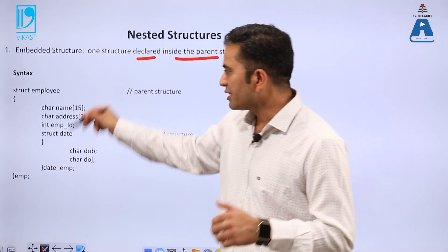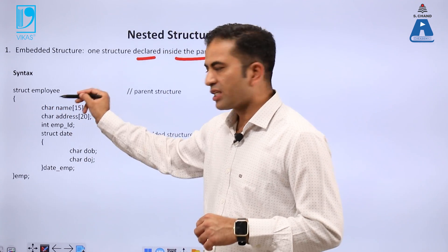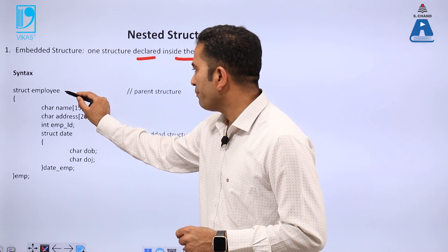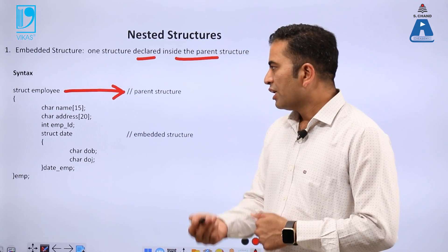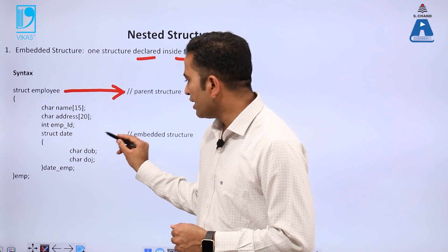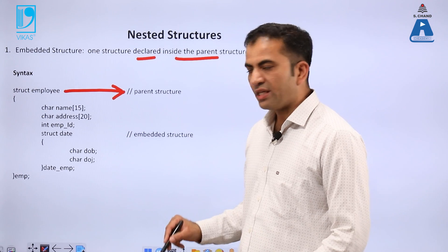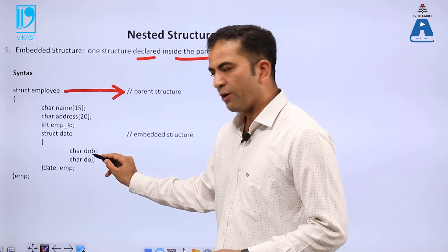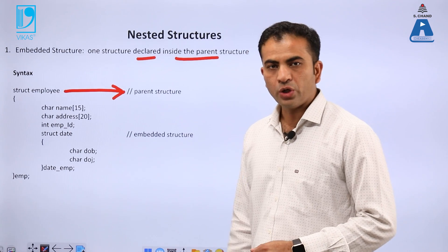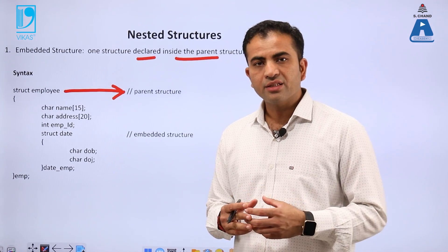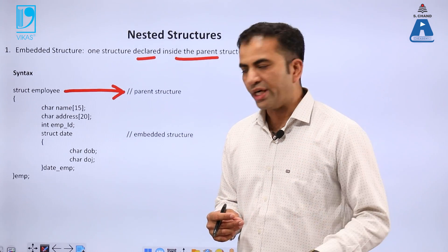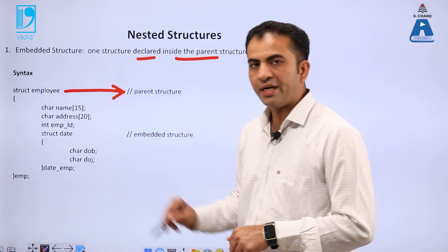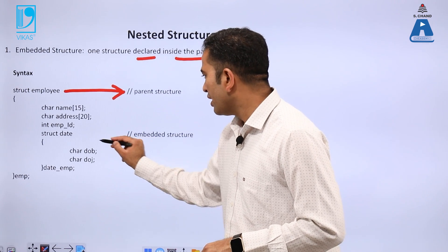What is the parent structure? Let us understand with the help of an example. This is the structure employee, which has members: name, address, and employee id. This is called the parent structure. Inside this structure, we are declaring another structure called date, which has two members: date of birth and date of joining. We are inserting date of birth and date of joining in a separate structure that is embedded into the parent structure. This is called embedded structure.